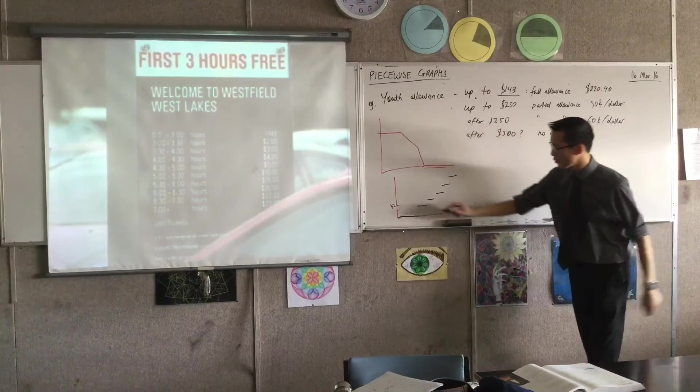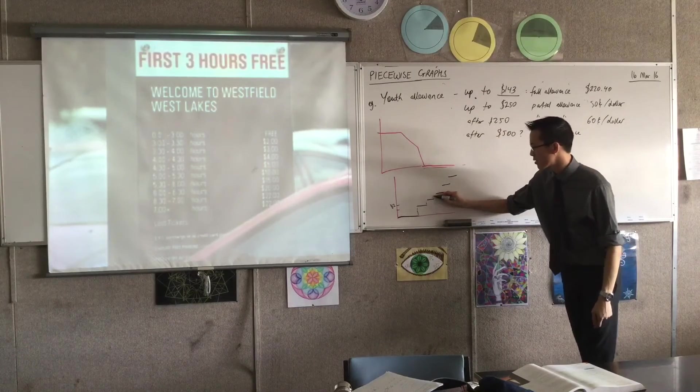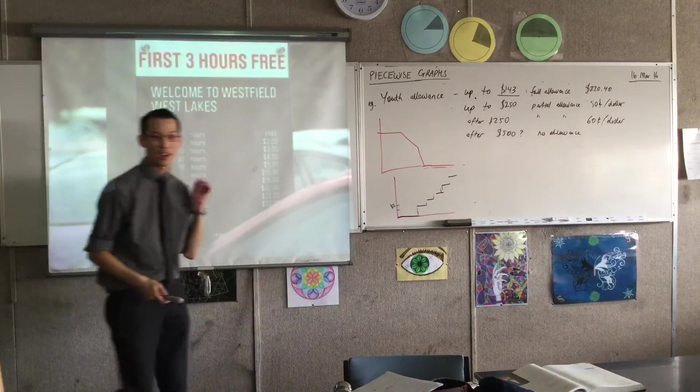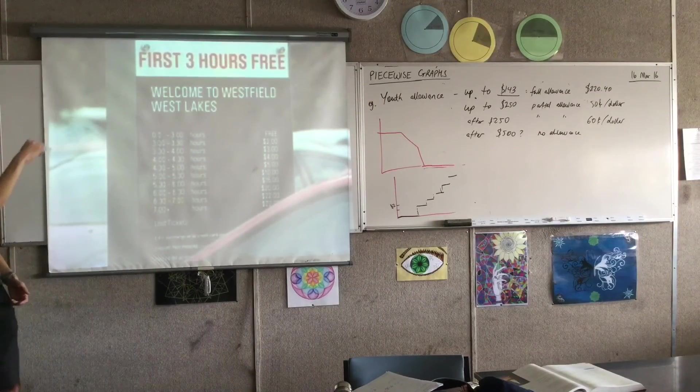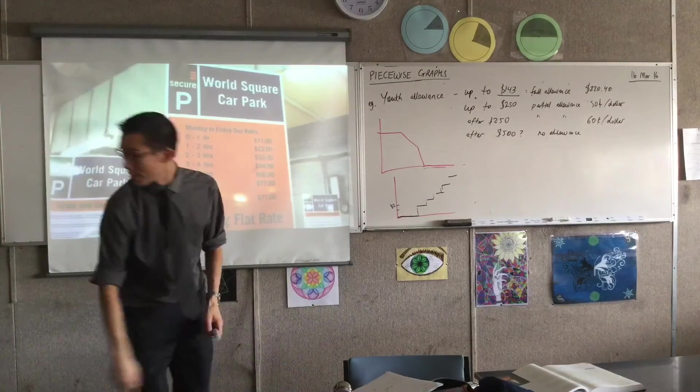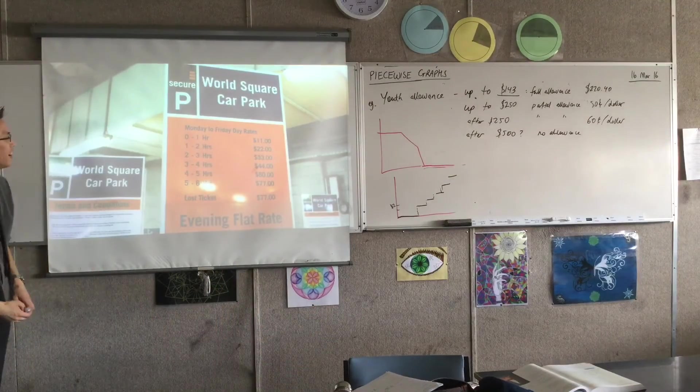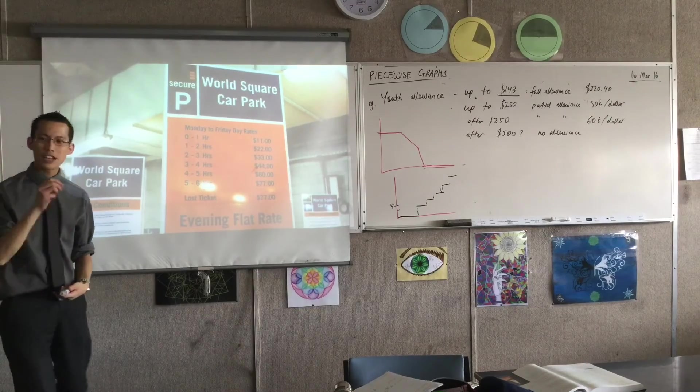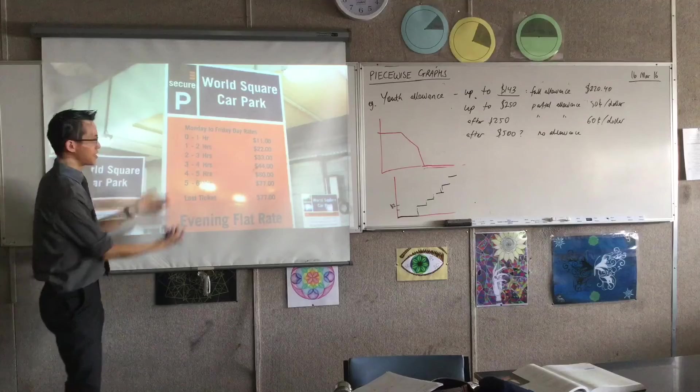Now because of the shape of this graph that looks kind of like this, it looks like a set of stairs, right? They call this a step graph because it literally looks like a set of steps. And when you think about it, these kinds of things, they happen all the time, right? They often happen with money because it's simpler that way.